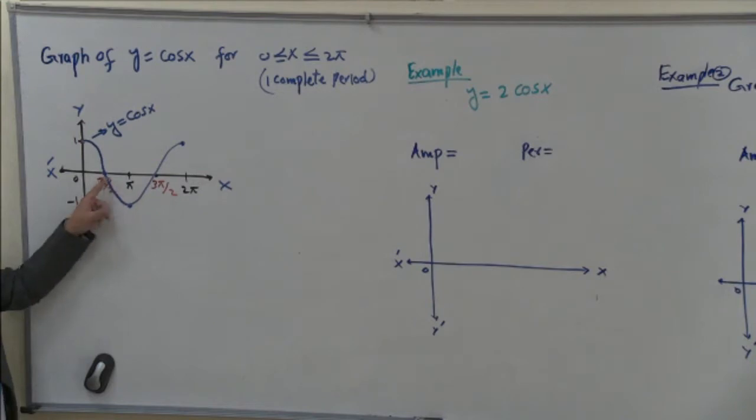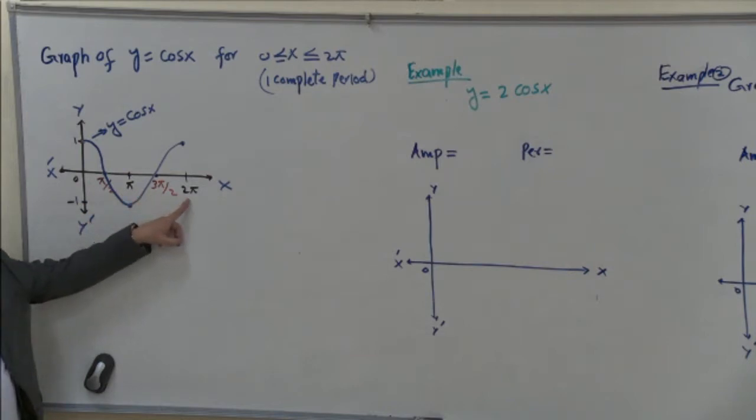And again, we divide this interval into some interval. And here are numbers 0, π/2, π, 3π/2, and 2π. So we have four intervals of the given interval. So graph passes like this. And this is the basic curve for the cosine function.